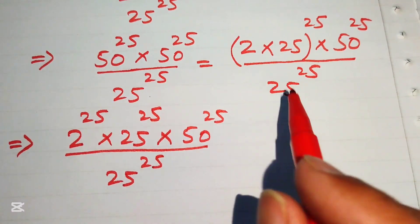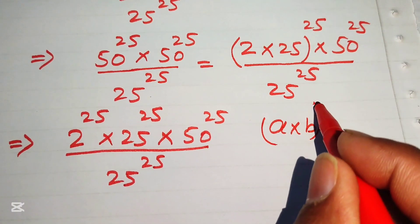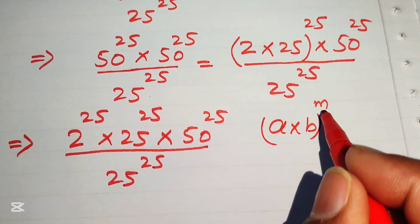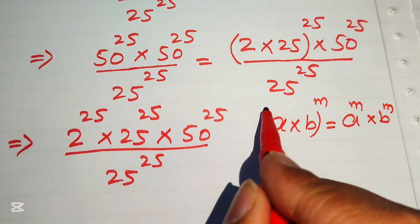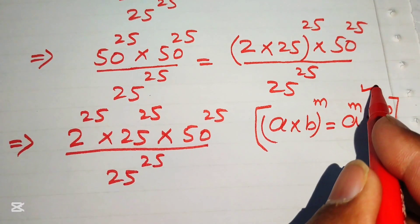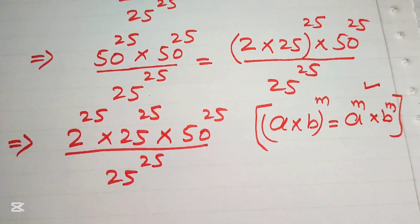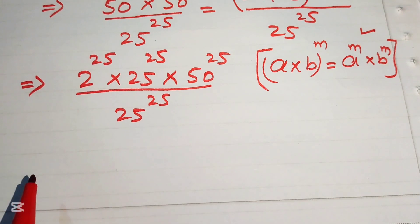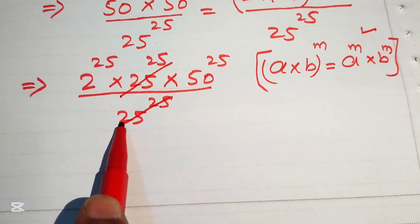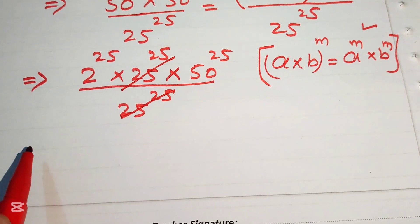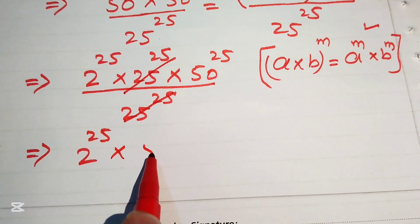Here we apply another exponent law: if you have (a multiplied by b) to the power of m, we write the exponent separately on both terms. After this simplification, the 25 to the power of 25 in the numerator is cancelled by the 25 to the power of 25 in the denominator. The remaining terms are 2 to the power of 25 multiplied by 50 to the power of 25.